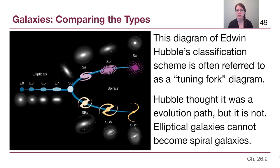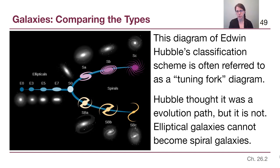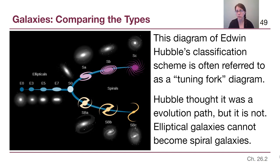You will sometimes see images of what's called the tuning fork diagram, or Edwin Hubble's classification scheme. When Hubble made this diagram initially, he thought it was an evolution path — that galaxies start out as ellipticals with no structure and then either form spiral arms or barred spiral structure. But it is absolutely not an evolution path. An elliptical galaxy cannot just become a spiral galaxy. Elliptical galaxies have no gas or dust, so there is no way for them to suddenly gain some, and with all their random orbits there is no way to flatten them into a disk.